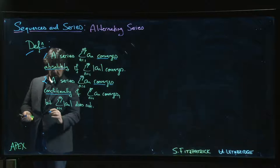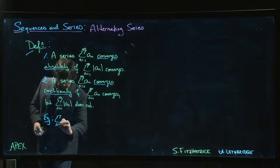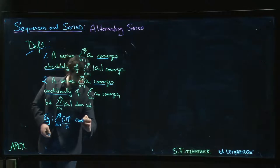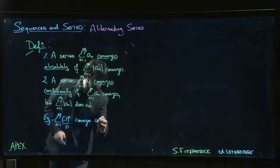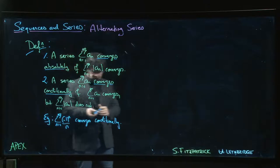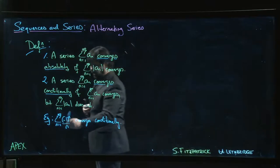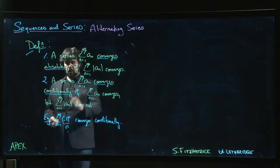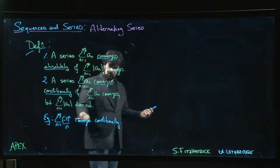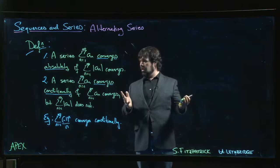The standard example is the alternating harmonic series: (-1)^n over n. That converges conditionally — we know it converges by the alternating series test. But if we take the absolute value of (-1)^n we just get 1, so the absolute value gives us the harmonic series, and we know the harmonic series diverges. So that's an example of a conditionally convergent series.